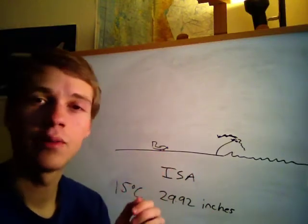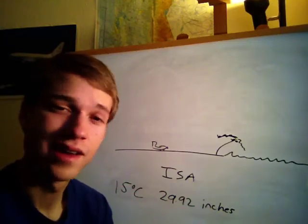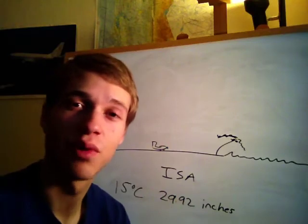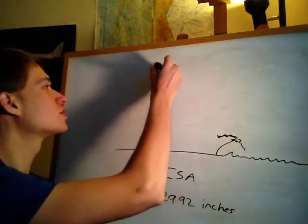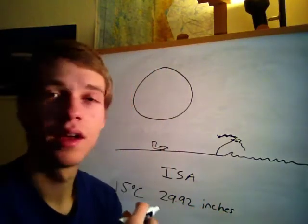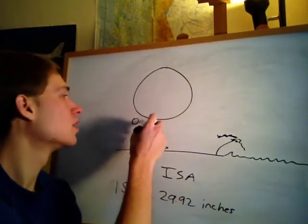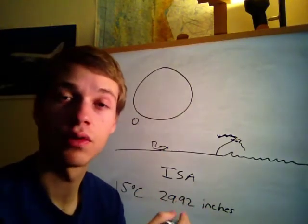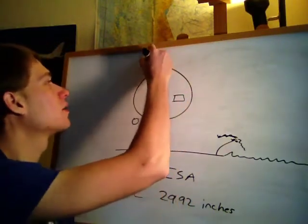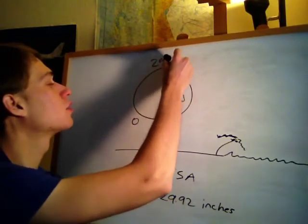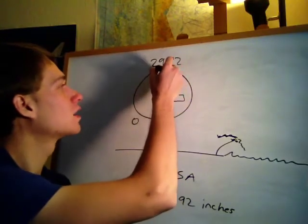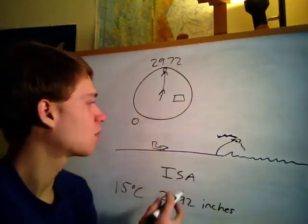The airplane is down at sea level and we don't have a standard atmosphere today. It's not 29.92 inches — instead, the altimeter setting has been reported at 29.72 inches. We learned in our flight instruments lesson that we correct the altimeter so it reads accurately for today's pressure setting, putting 29.72 in the Kollsman window so the altimeter correctly shows zero feet.